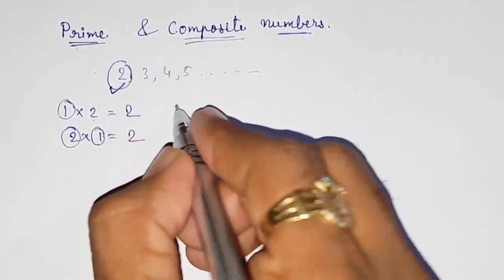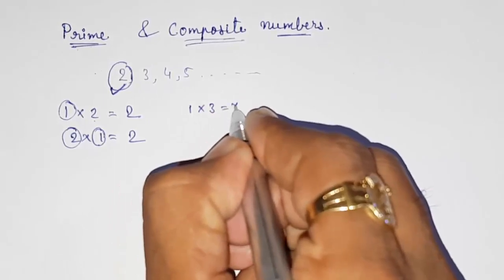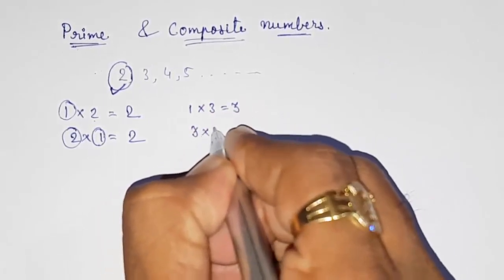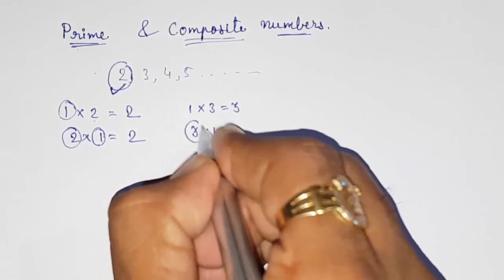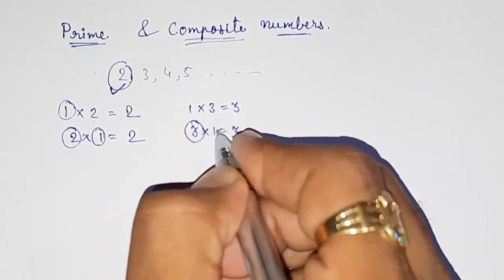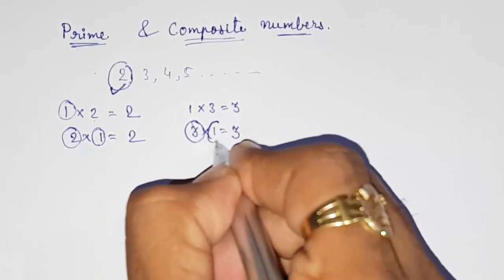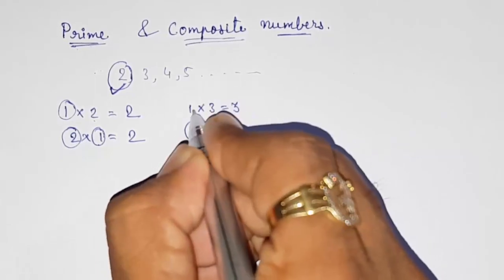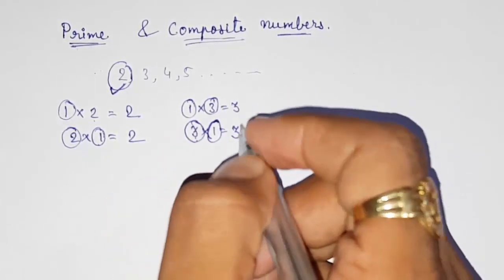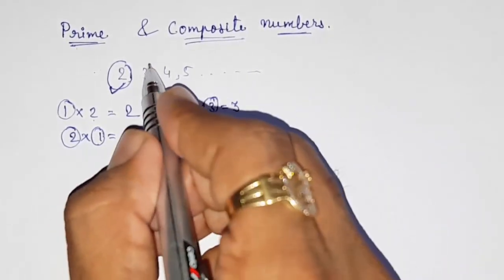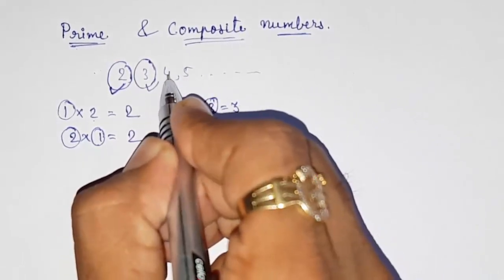For three also, you can say one into three is three, or three into one is three. So here also you are getting two factors: one and the number itself. So three is also a prime number.